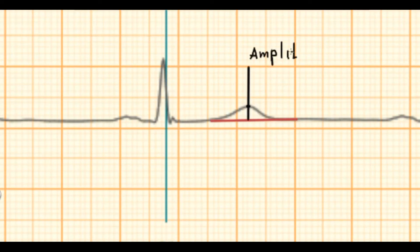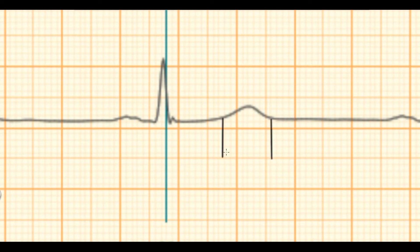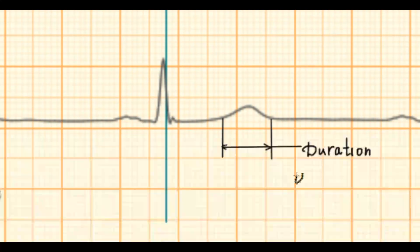Normally, amplitude of T wave is less than 6 mm in standard leads and less than 10 mm in chest leads. Duration range from 0.10 to 0.24 second.